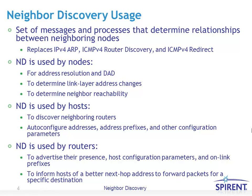Neighbor Discovery is a set of messages and processes that determine the relationship between neighboring nodes. It replaces IPv4's ARP, and also replaces ICMPv4 Router Discovery and ICMPv4 Redirect.